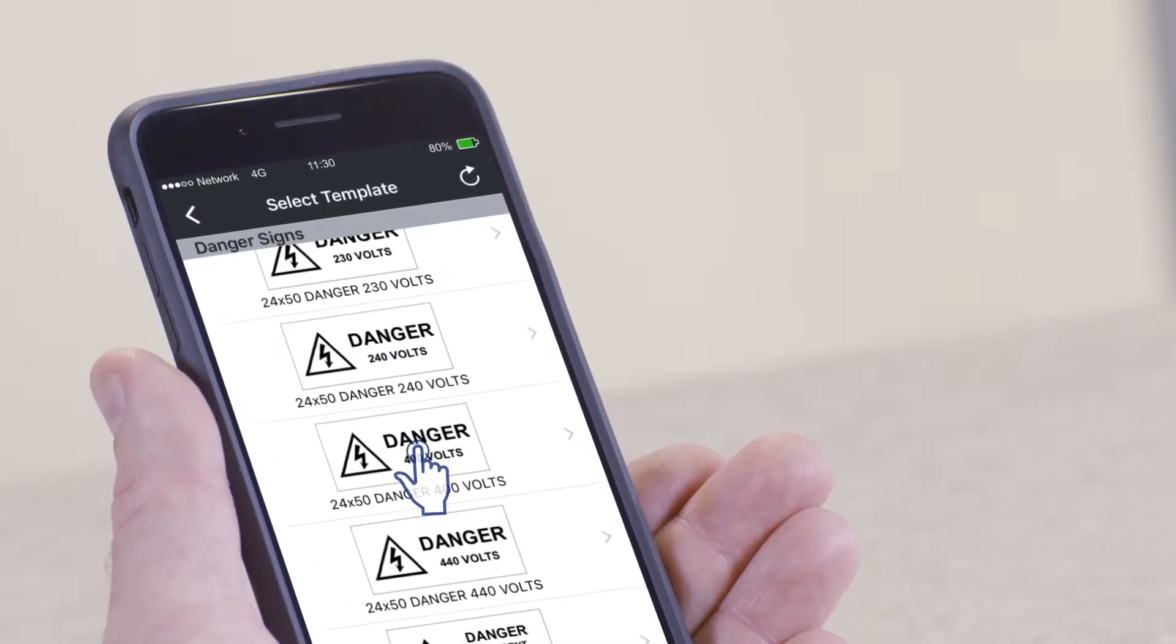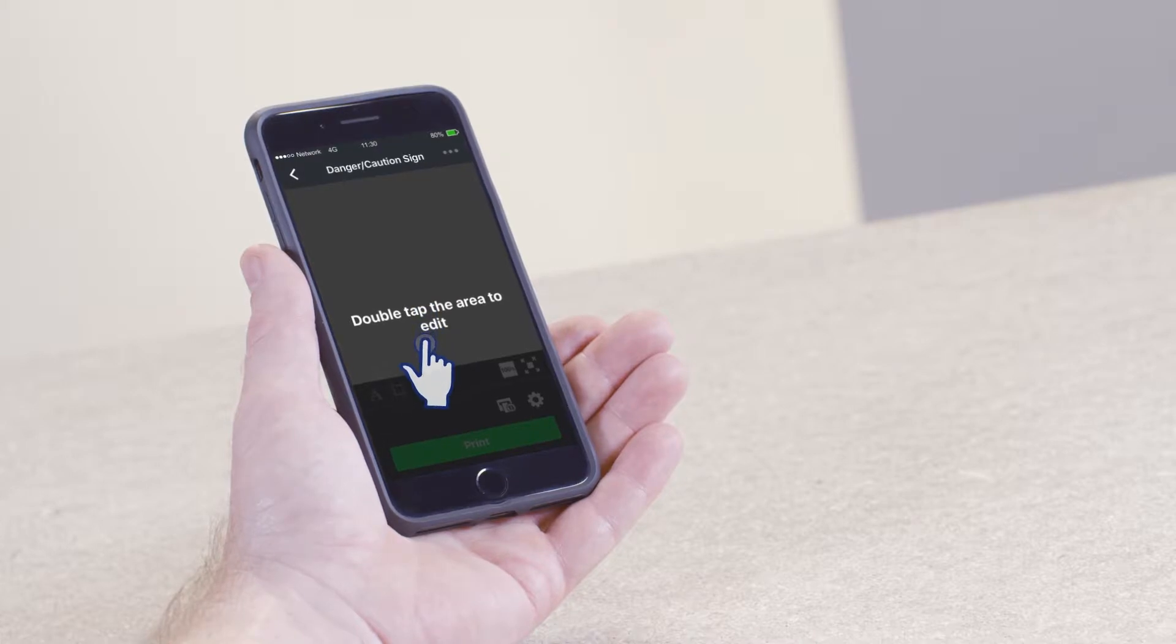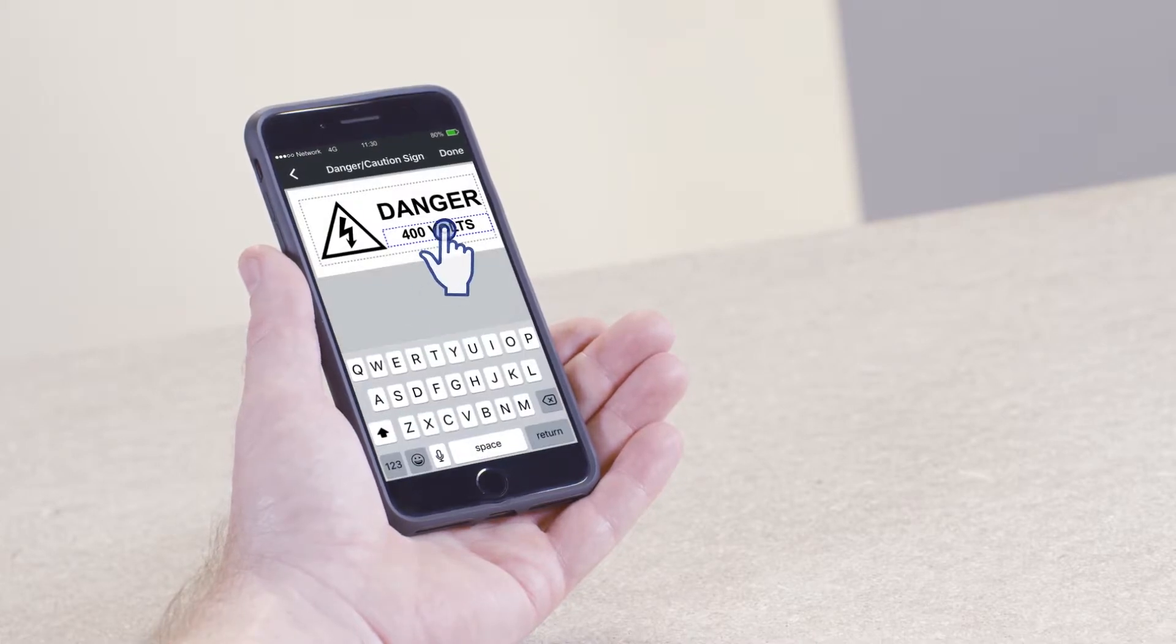Select the template that you want to print. A message will appear that reads, Double tap the area to edit.